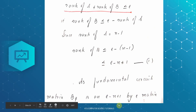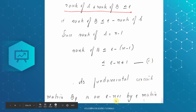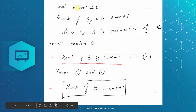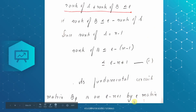The next term is the fundamental circuit matrix VF. VF is the fundamental circuit matrix, and the sub-matrix is the fundamental matrix. If you have a dimension of e minus n plus 1 by e matrix, it is the fundamental circuit matrix. The dimension is e minus n plus 1 by e — that is, e minus n plus 1 rows and e columns.